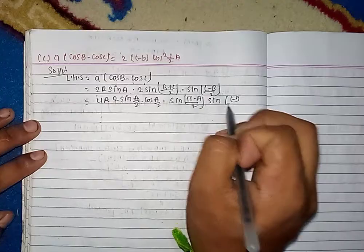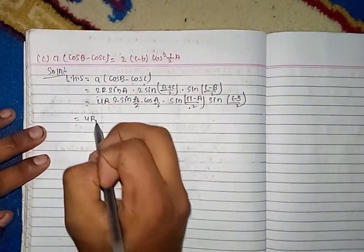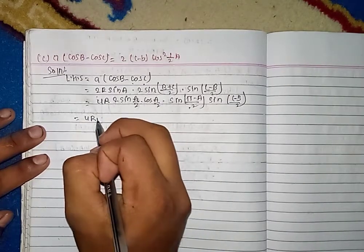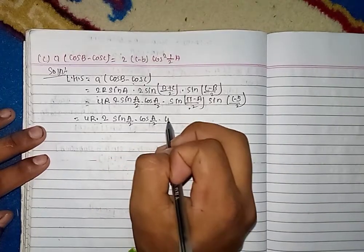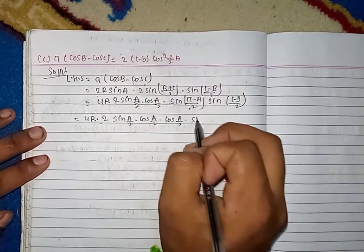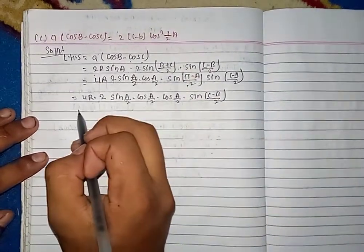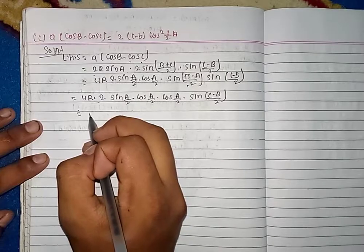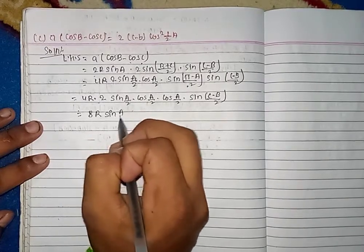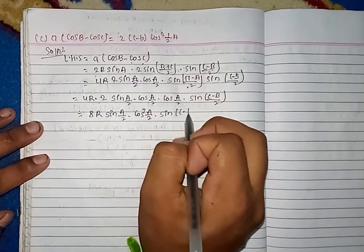So sin(C−B). 2R·2·sin(A/2)·cos(A/2)·sin(C−B)/2. So this is the case. We can use the line: 8R·sin(A/2)·cos²(A/2)·sin(C−B).